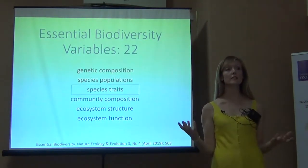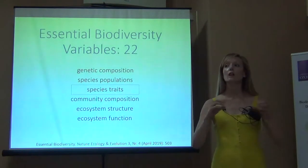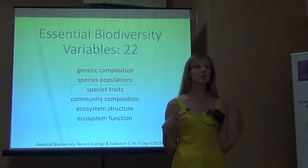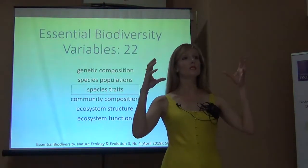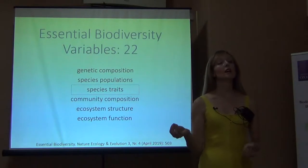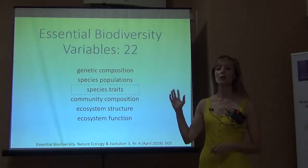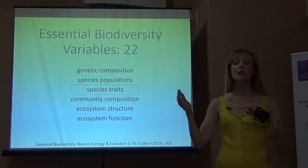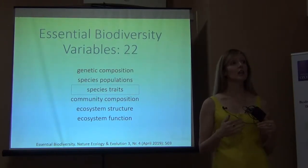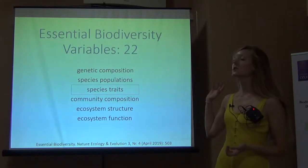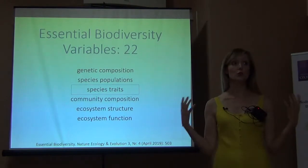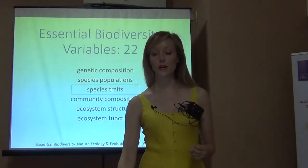There are six broad-scale classifications or categories of essential biodiversity variables. Genetic composition is one, species populations is another. Within each of these classes, the community has highlighted a number of specific variables — in total, 22 essential biodiversity variables. I'm going to talk to you about species traits.